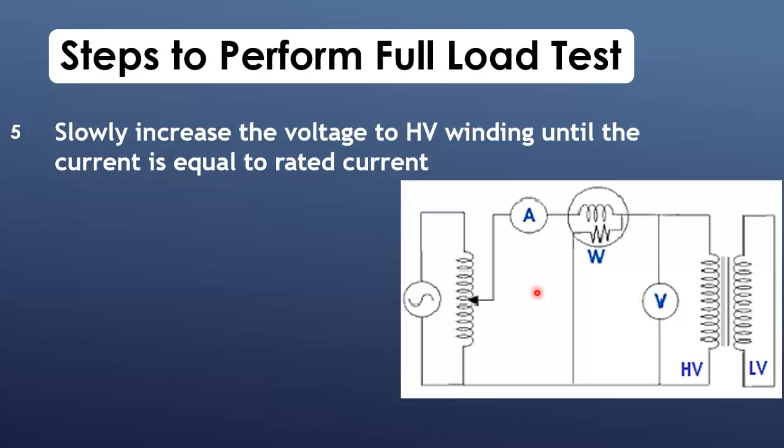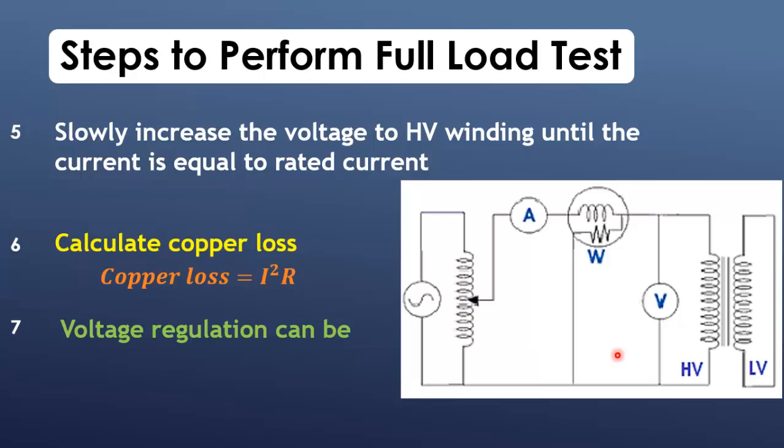The final step is to calculate copper loss, which refers to the power loss that occurs in the windings, both primary and secondary, of a transformer due to the resistance of the winding conductors when current flows through them, using the formula P equals I square R. Another purpose is to calculate voltage regulation by measuring voltage at no-load and voltage at full load.